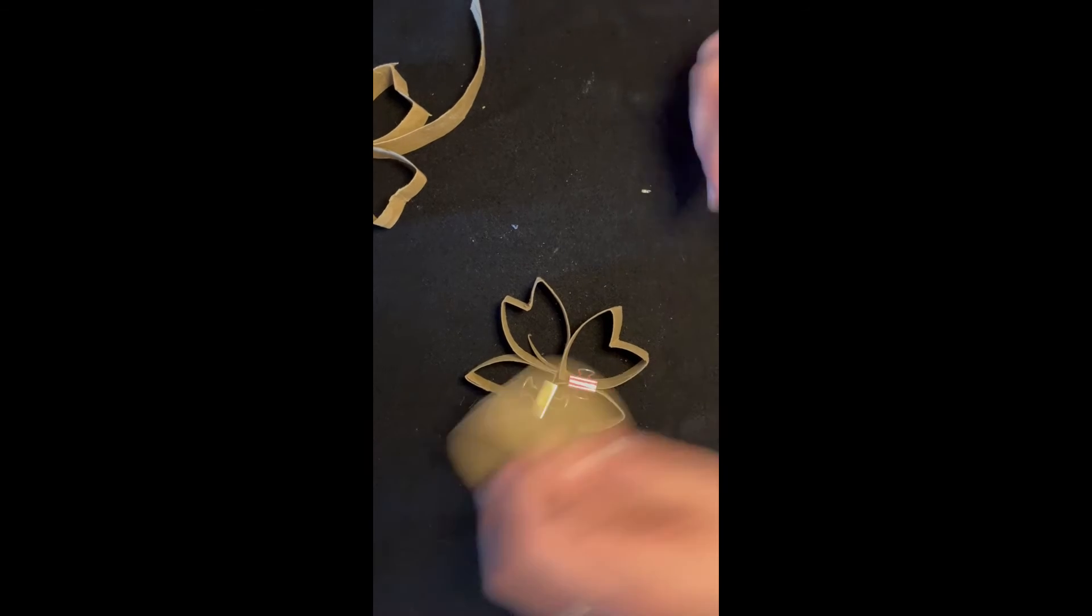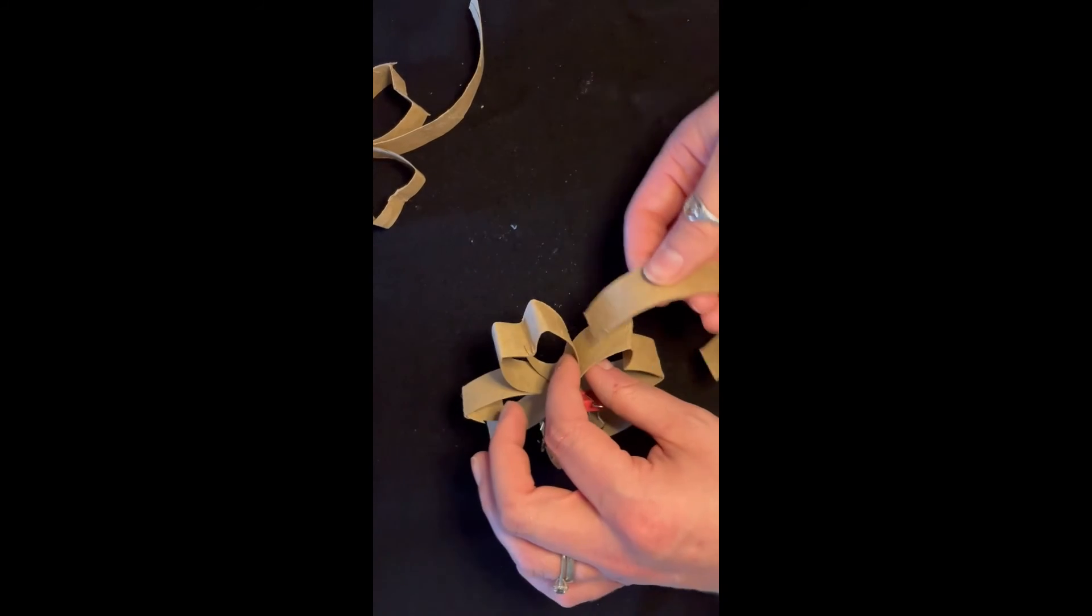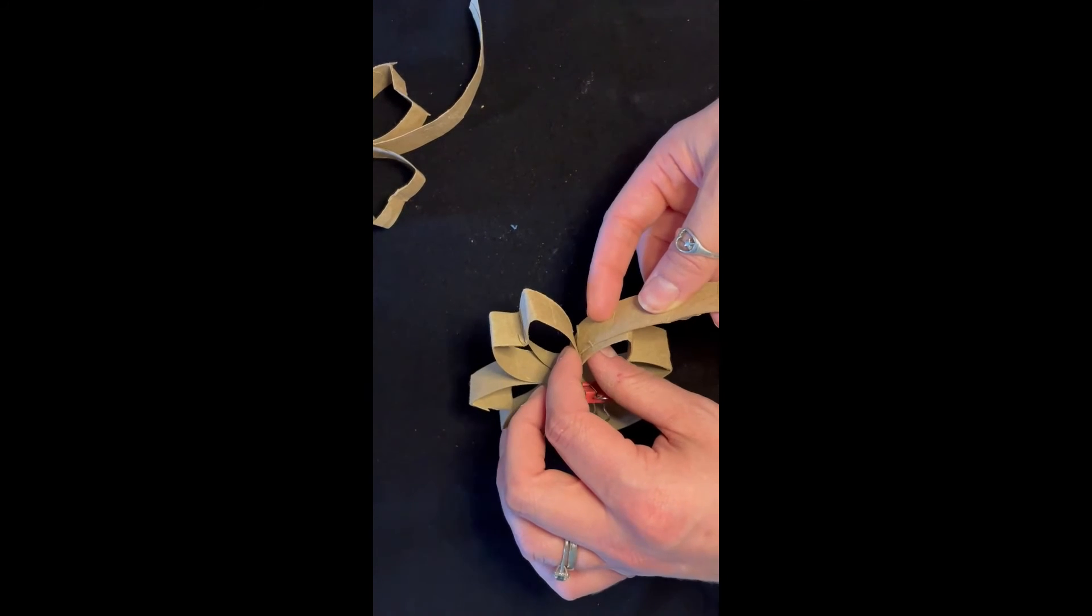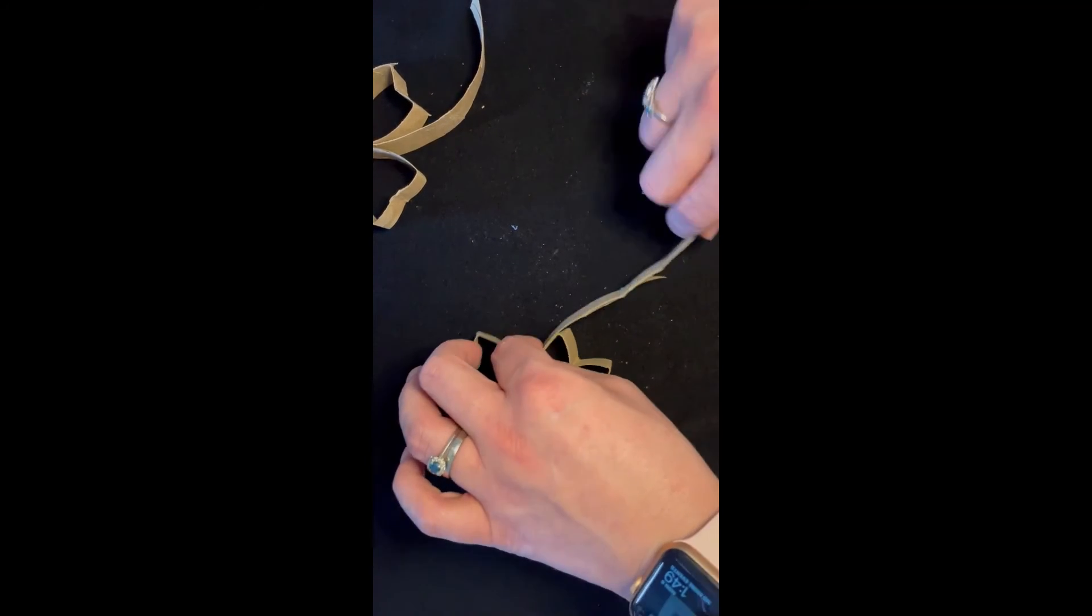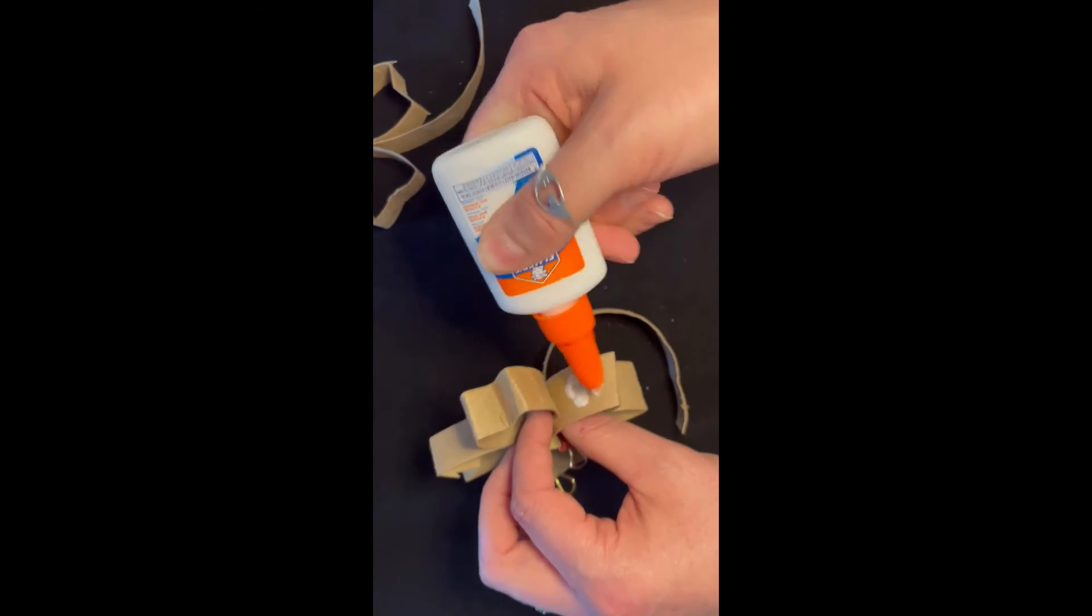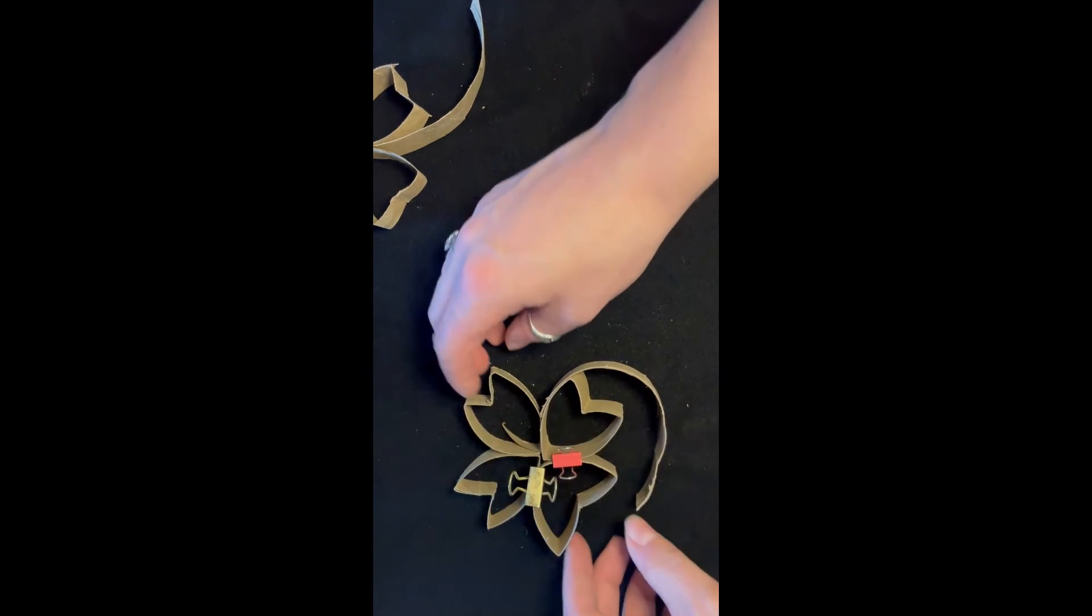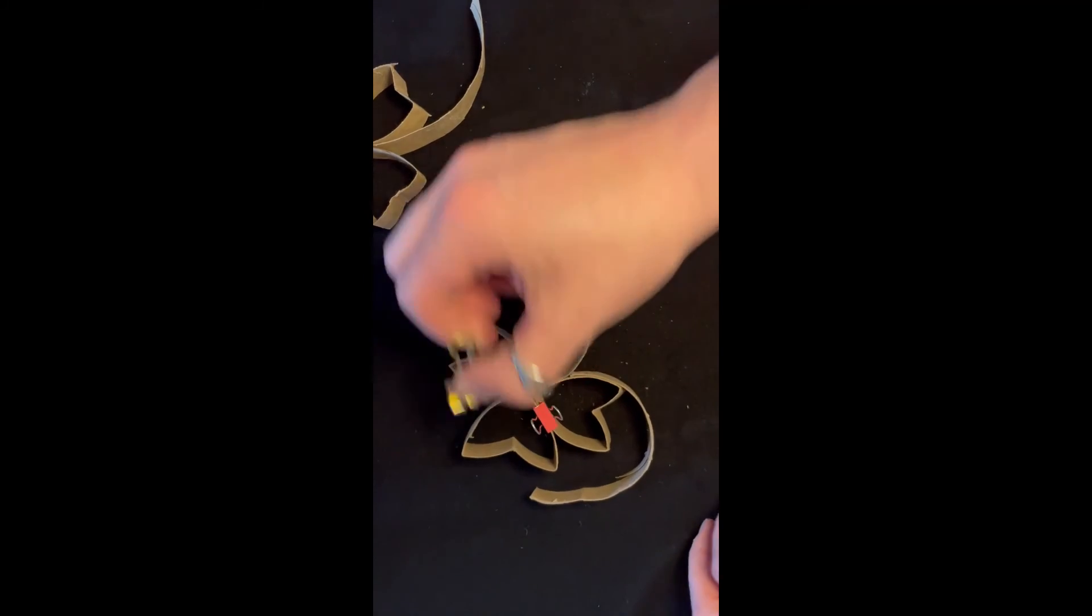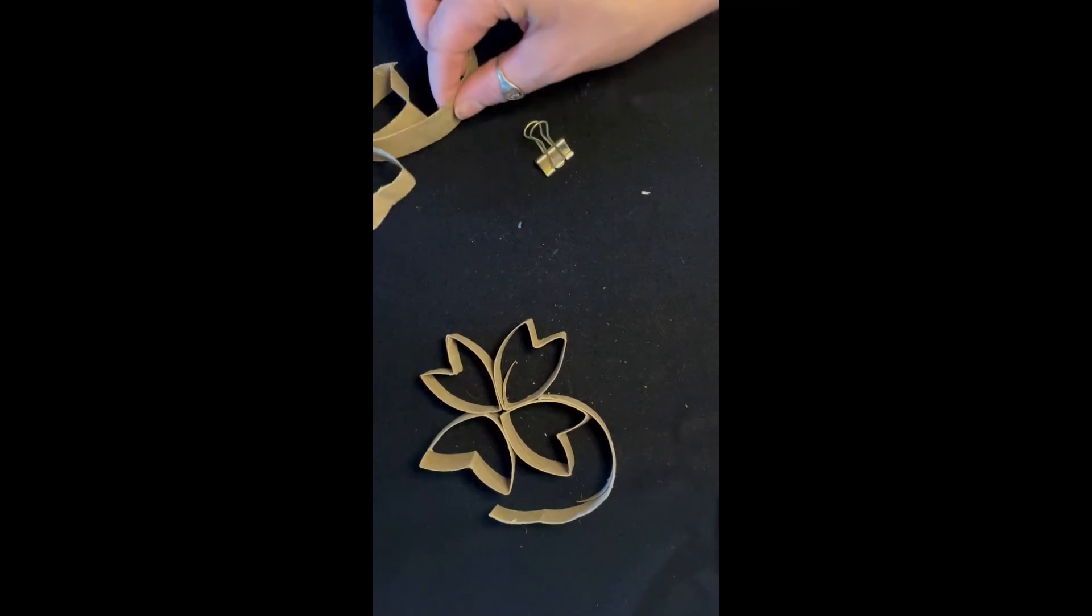And now he needs a stem or she needs a stem. And so it will stick a little bit easier if you match the curve to the curve. So we're going to put a little glue and bam. Hold it or binder clip it. And now you have a little shamrock.